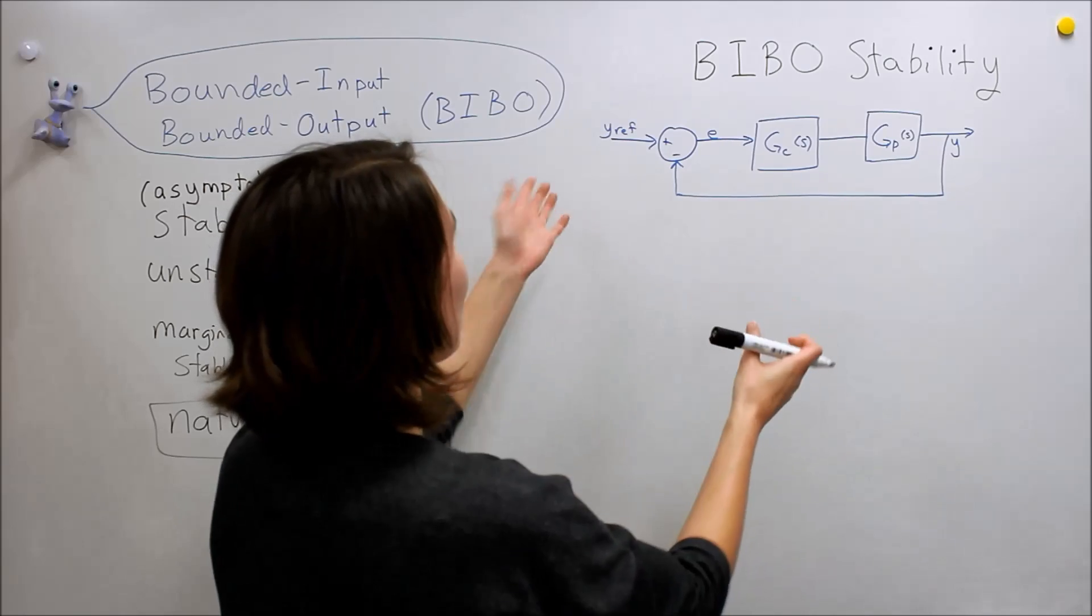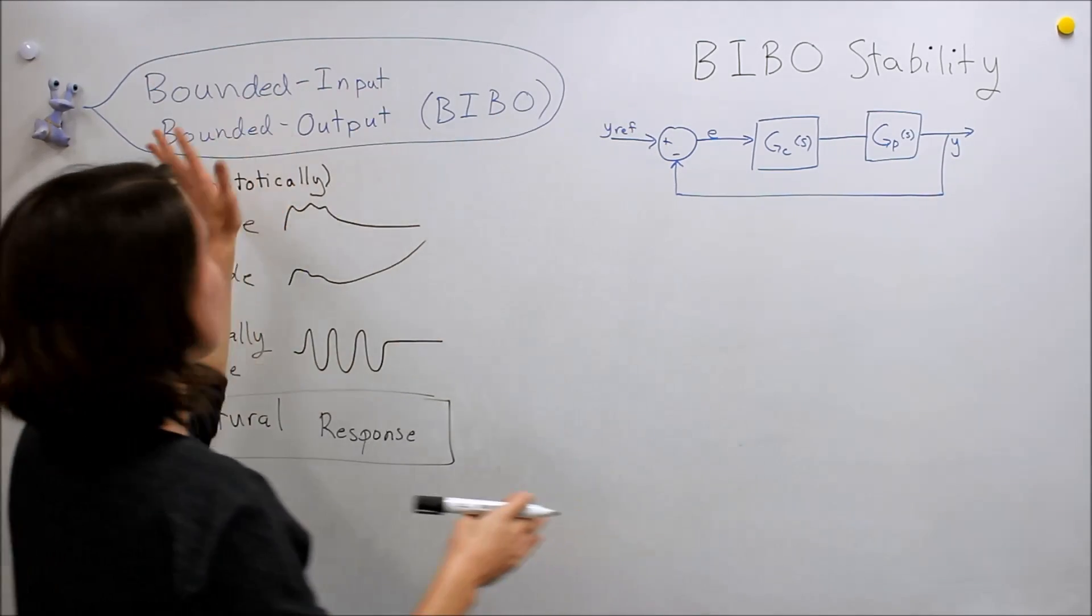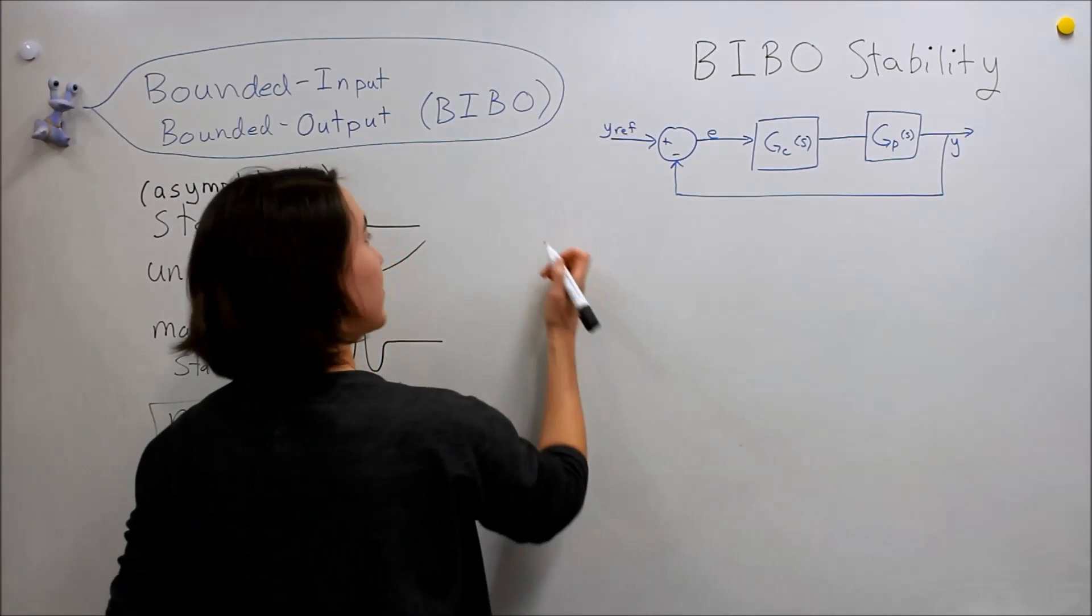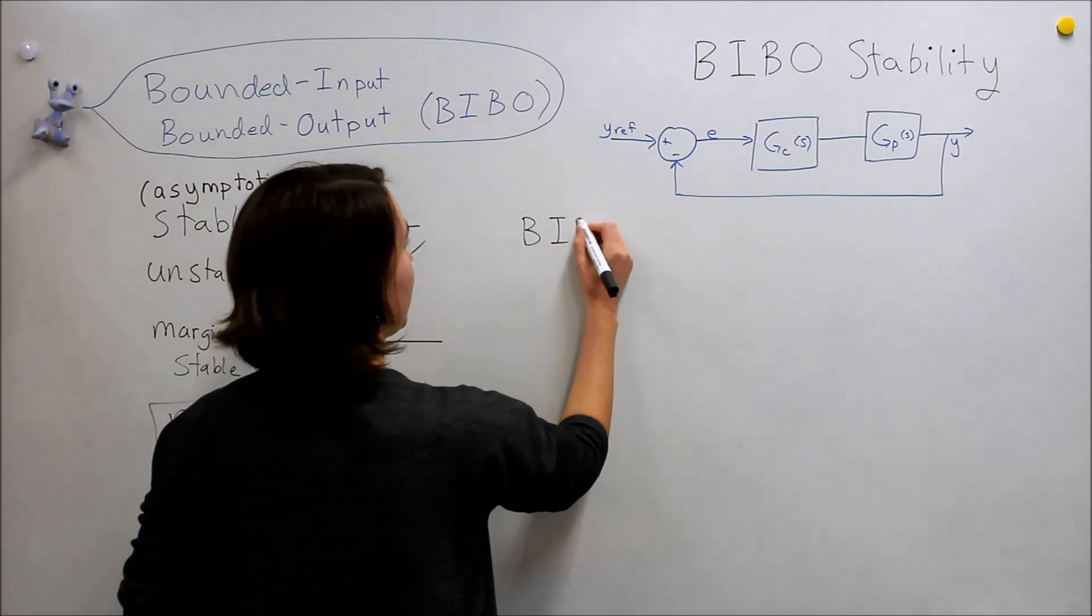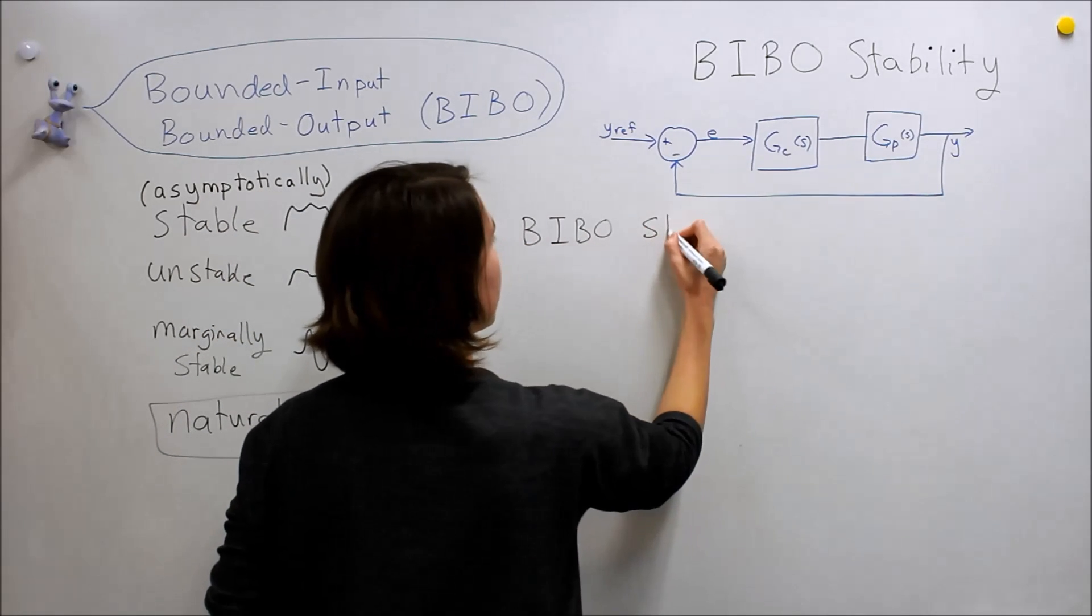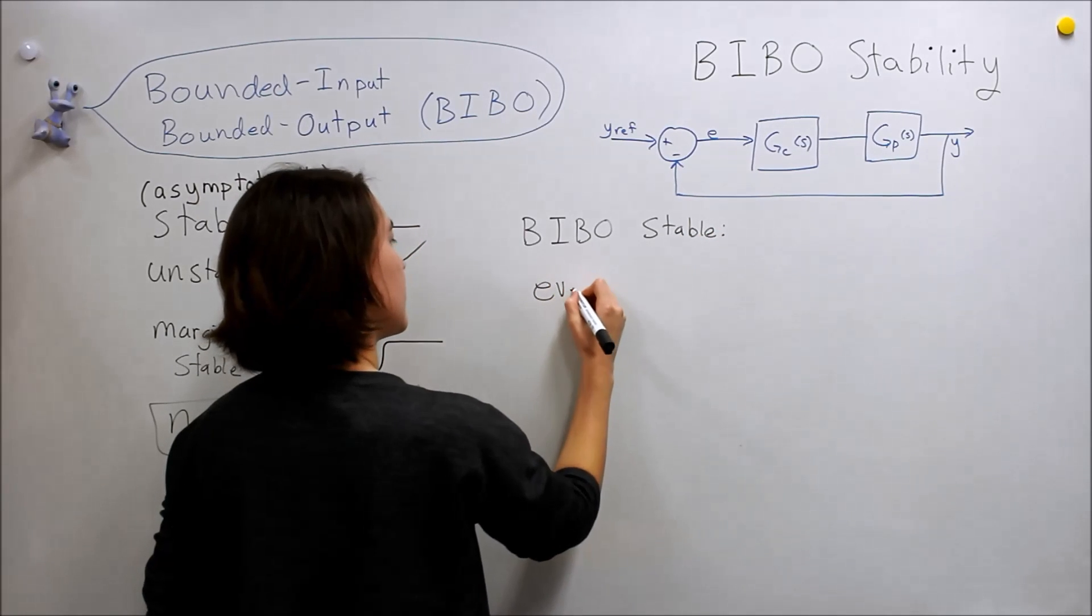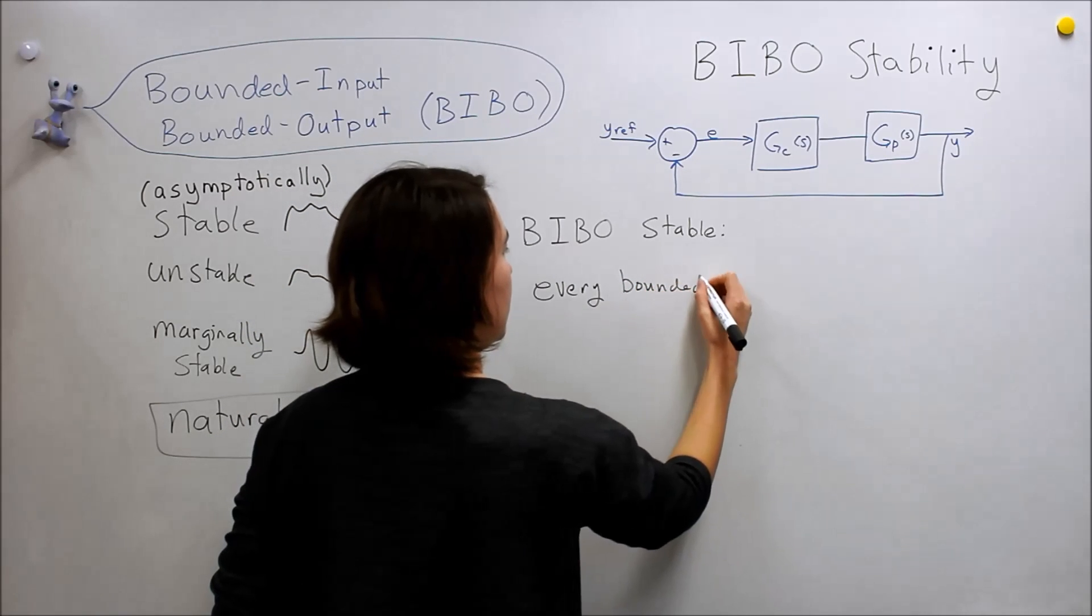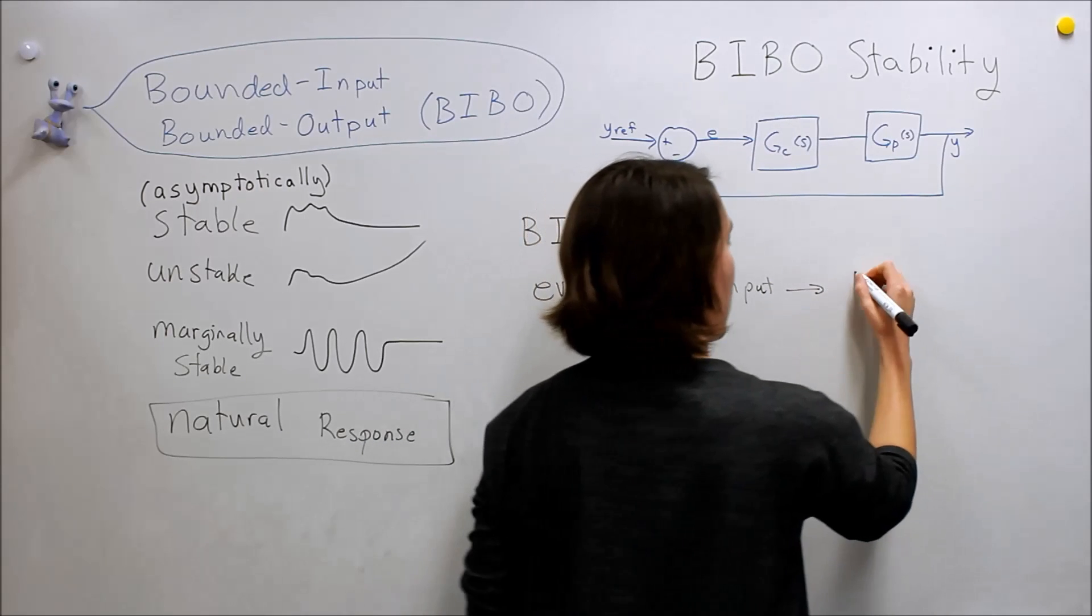So now we have to think about, we're going to define BIBO, so bounded input, bounded output, stability. And the basic idea is that, so if it is a BIBO stable, it means that every bounded input yields a bounded output.